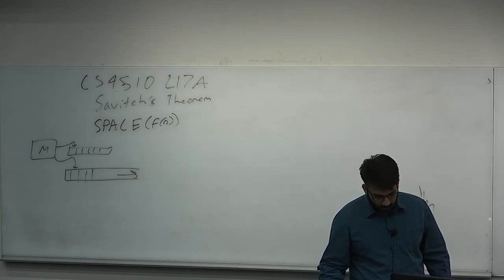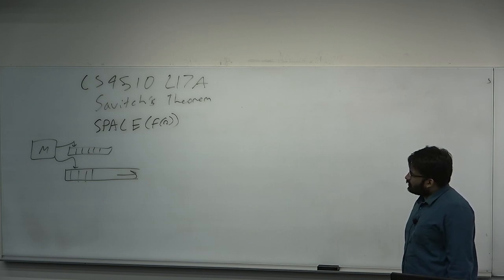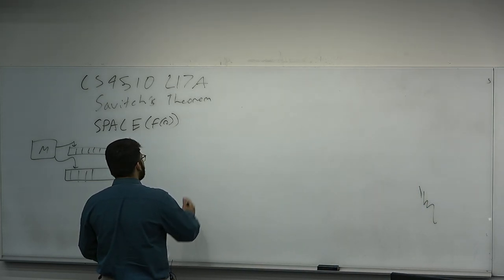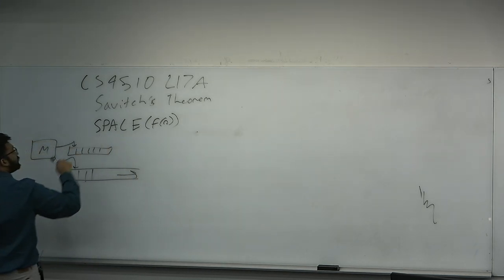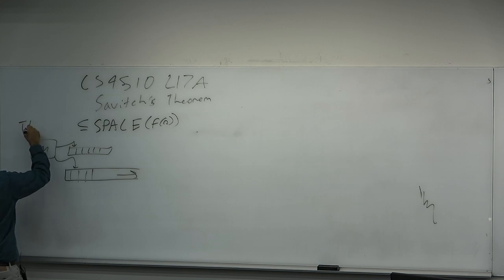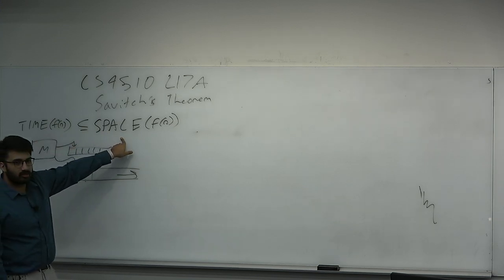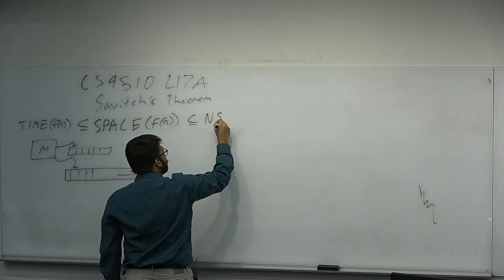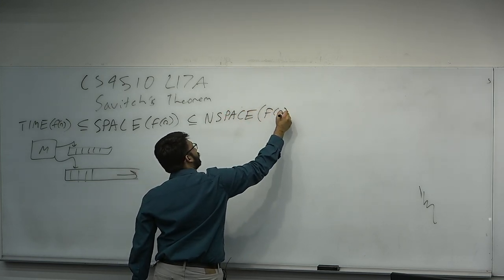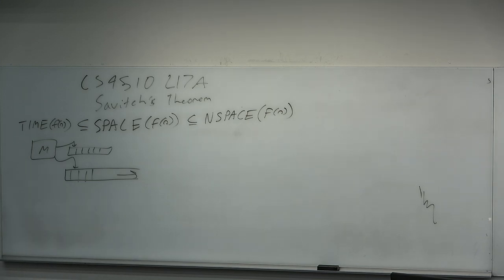I'm going to prove the chain of time bounds and space bounds. We know that every language decidable in time f(n) is decidable in space f(n), because any machine that uses f(n) time can use no more than f(n) new cells of the tape. So time(f(n)) ⊆ space(f(n)). We also know that space(f(n)) ⊆ nspace(f(n)), where nspace is the space a non-deterministic Turing machine uses — measured as the extra work tape used on the longest branch. If one branch uses linear space and another uses quadratic, the space bound of that machine is quadratic.